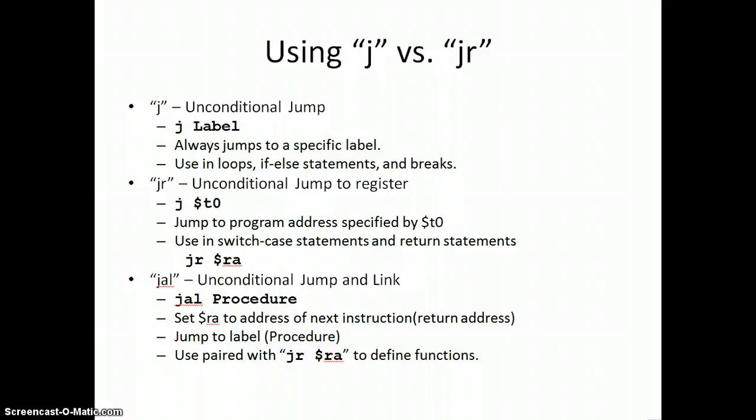I also wanted to clear up using J versus JR and JAL. J is the unconditional jump and it always goes to a specified label. We can't change this label during execution. We can only change it at compile time. We can't change it during runtime. We can only change it at compile time, which is what label is. We use this in loops, if-else statements, and breaks. That's pretty much exclusively where we use J.